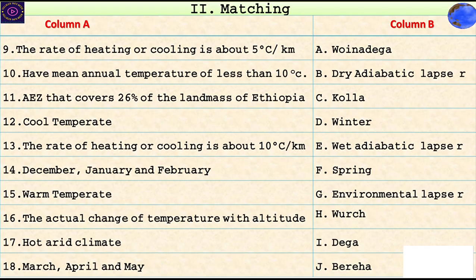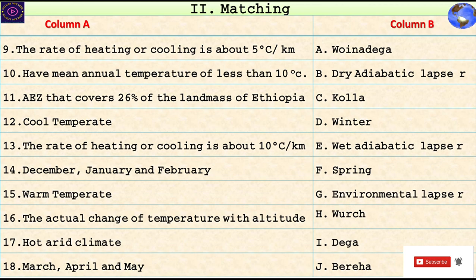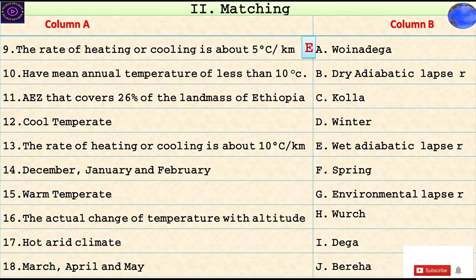The rate of heating or cooling is about 5 degrees centigrade per 100 metres — the adiabatic lapse rate. It has a mean annual temperature of less than 10 degrees centigrade.